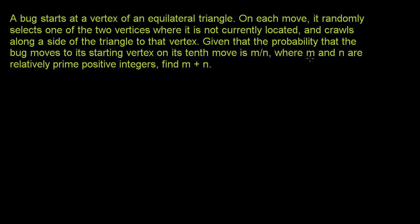The condition that m and n are relatively prime positive integers essentially says we have the fraction in its simplified form — you can't simplify it anymore. So let's think about the problem. We have an equilateral triangle with three vertices: a, b, and c. Our bug is going to start at vertex a.